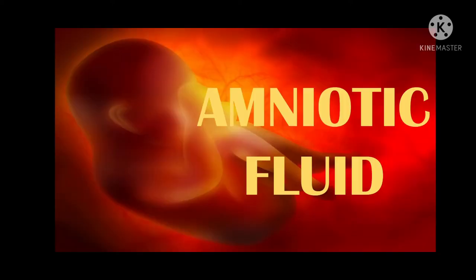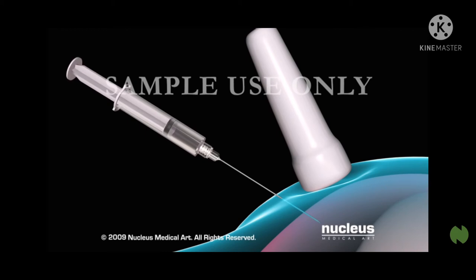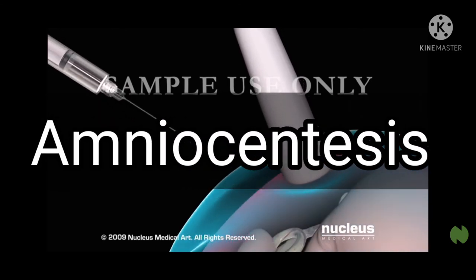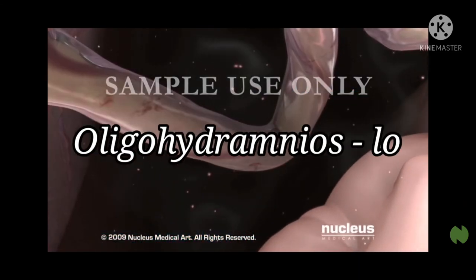Next is amniotic fluid. Amniotic fluid is a clear yellow fluid found within the first 12 days following conception within the amniotic sac, surrounding the growing baby inside the uterus. At first, amniotic fluid consists of water from the mother's body, but gradually the larger proportion is made up of the baby's urine. It contains important nutrients, hormones, and antibodies, and helps protect the baby from bumps and injury. If amniotic fluid levels are too low or too high, this can pose a problem. Two conditions that can cause a pregnant mother to undergo amniocentesis are oligohydramnios or polyhydramnios.